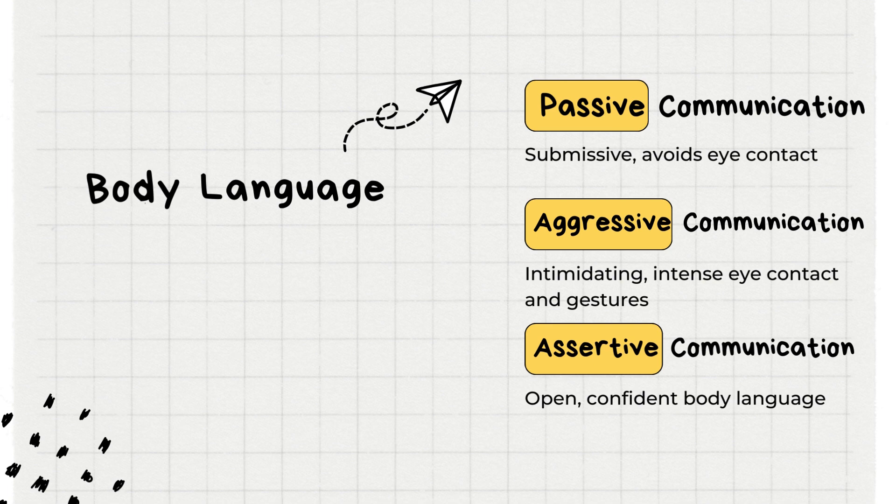Body Language — Passive Communication: passive communicators often display submissive body language, avoiding eye contact and presenting themselves in a way that may be perceived as hesitant or insecure. Aggressive Communication: aggressive communicators exhibit intimidating body language with intense eye contact and gestures, contributing to an atmosphere of tension and discomfort. Assertive Communication: assertive communicators use open and confident body language, maintaining appropriate eye contact, projecting self-assurance without dominating or intimidating others.